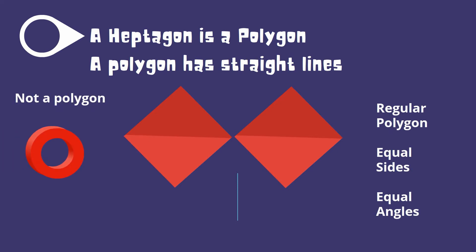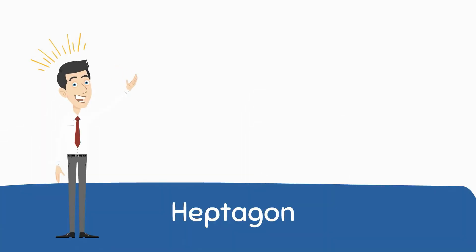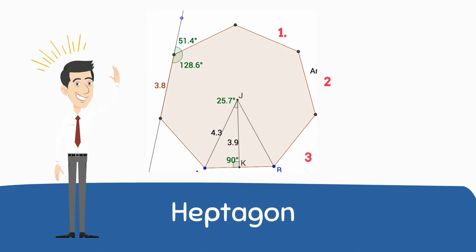A circle or shape that has curves is not a polygon. A regular Heptagon has seven equal sides and seven equal angles.